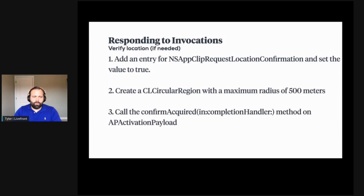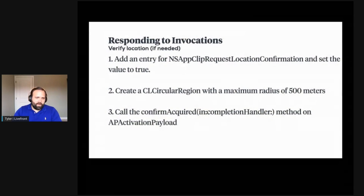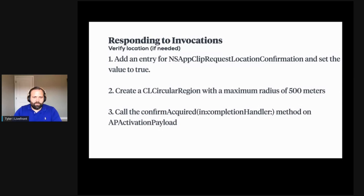After adding that PList entry, you create a CLCircularRegion with a maximum radius of 500 meters. The latitude and longitude come from one of two places: either your invocation URL includes the latitude and longitude as query parameters — useful if placing a QR code on a building — or you use a unique identifier to make a network request and get the lat/long for that location. Those two approaches are how you create the CLCircularRegion.